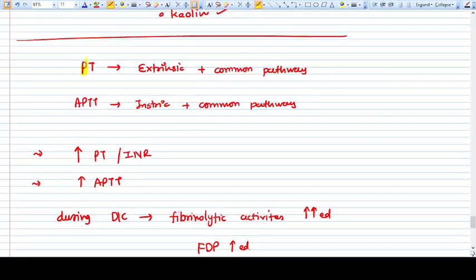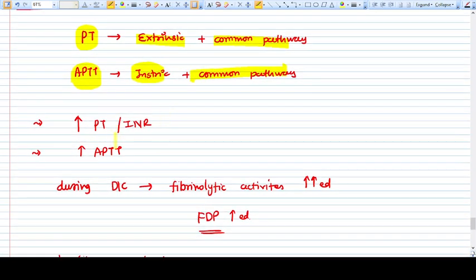PT measures extrinsic and common pathway. aPTT measures intrinsic and common pathway. When there's a decrease in all coagulation factors, or all coagulation factors have been purchased, which is happening in DIC, at that time you will find that both aPTT and PT will be on the higher side.